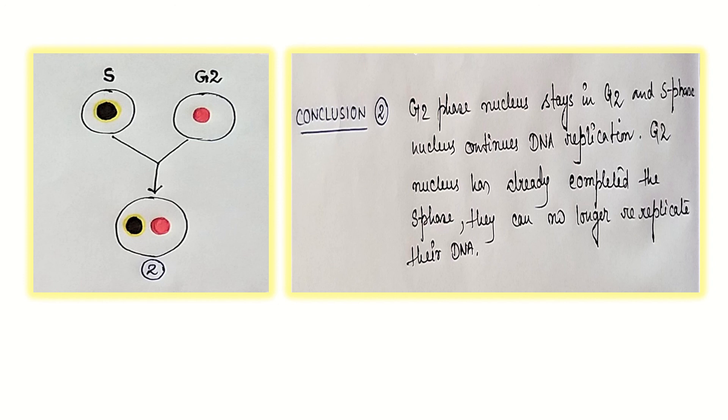There are special proteins known as MCM proteins which binds to the origin of replication together with ORC. MCM proteins are needed for initiation of DNA replication. It can only bind to the nuclei which is undergoing G1 phase. Please note this.